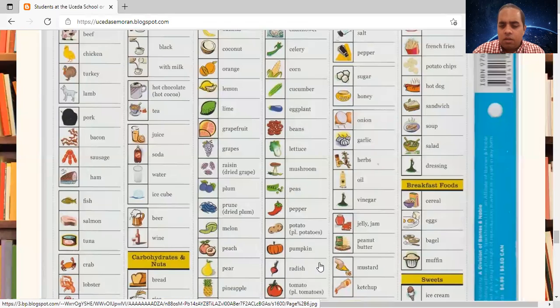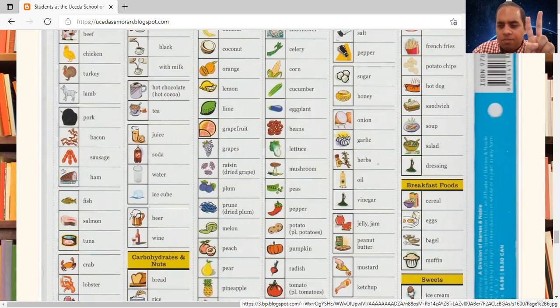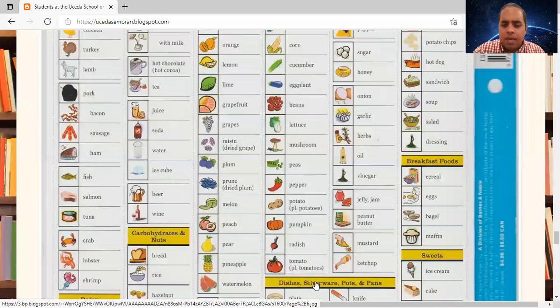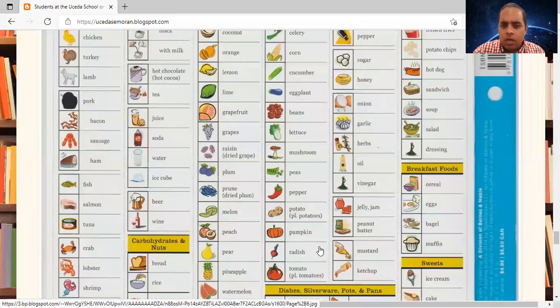Pumpkin. Radish. I have one tomato. I have two tomatoes. Tomato is singular. Tomatoes is plural.